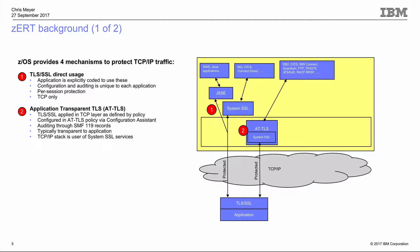AT-TLS is a very popular feature in Communication Server, used by products like DB2, CICS, IMS Connect, and many customer applications. It's based on our policy agent, and we do write some AT-TLS information to SMF — specifically in the TCP connection termination record, SMF 119 subtype 2. So if you're using AT-TLS, there is an audit trail in SMF showing what protection was applied.